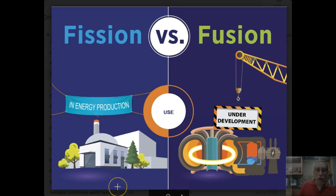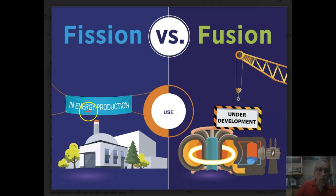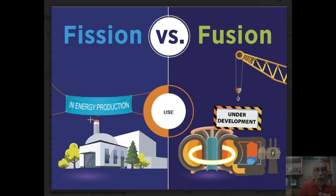Here's the next difference: how these different processes are used. The most important use, here where we live on earth, is that we can produce electricity. They call it energy production, but we already have the energy — we're just turning it into something more useful, in particular electricity. So we have nuclear-powered generating plants that make electricity out of this stored nuclear energy. But that's only done through a fission kind of reaction. As of right now, there is no good use of fusion here on earth — scientists have not been able to practically recreate the fusion process.